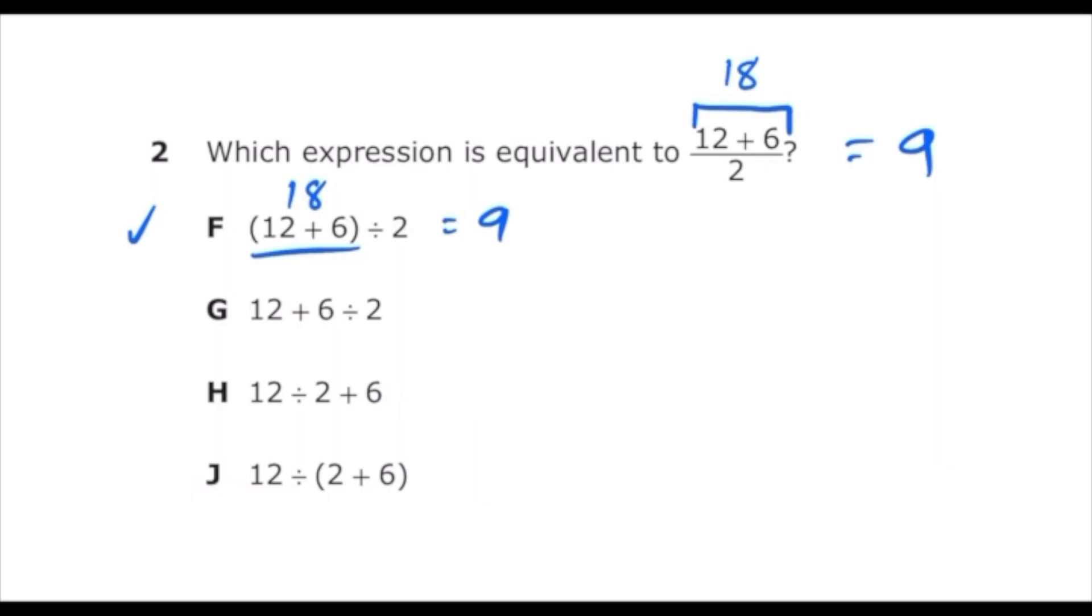Letter G, again we have to use order of operations. We have to do 6 divided by 2 first, then we add to 12. So 6 divided by 2 is 3, plus 12 is 15. So that's definitely not going to be it. Letter H, we have to divide 12 by 2 first, and that's going to give us 6. Then whenever we add 6 more, that's going to give us 12. So that's also not going to be correct.